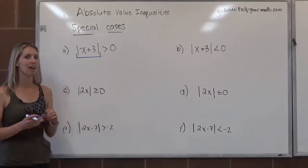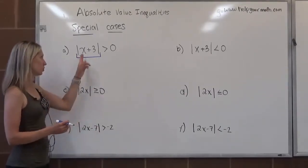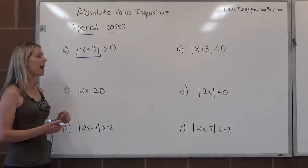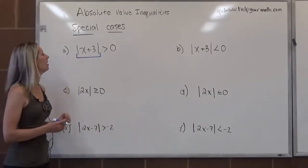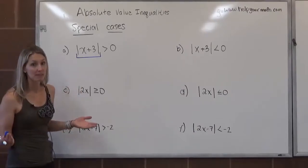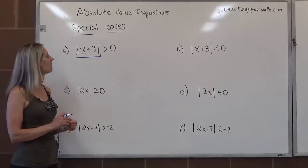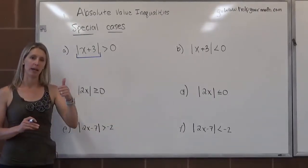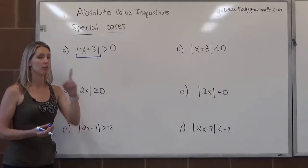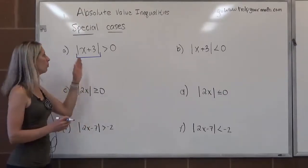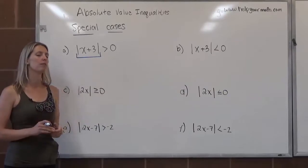Everything would be a solution, right? If x is 2, then 2 plus 3 is 5, and the absolute value of 5 is 5, which is greater than 0. Check your negatives: negative 10 plus 3 is negative 7, and the absolute value of negative 7 is 7, which is greater than 0. So it looks like we're going to have a lot of solutions, but there's only one time when this is not greater than 0. Can you think of what that time is?